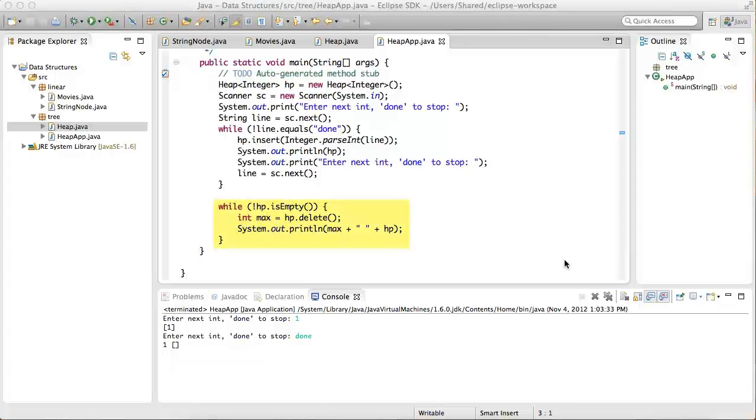In the second while loop, the items in the heap are deleted one at a time, as long as the heap is not empty, and both the deleted item and the resulting heap are printed. Okay, let's run the application.